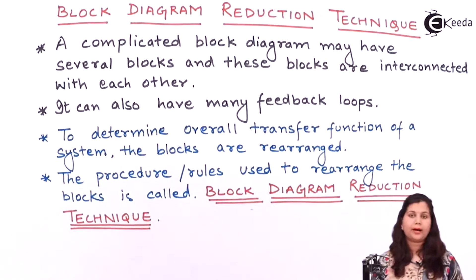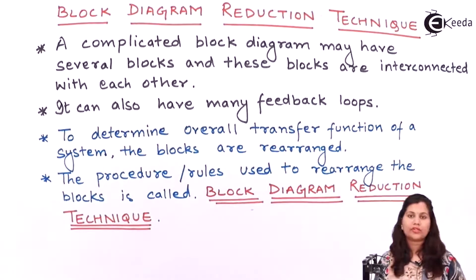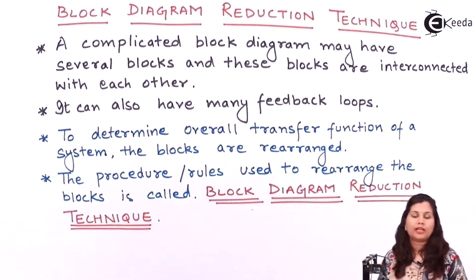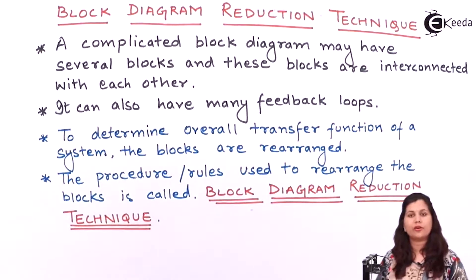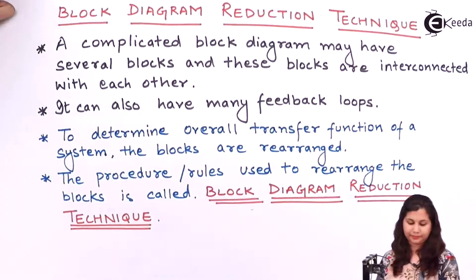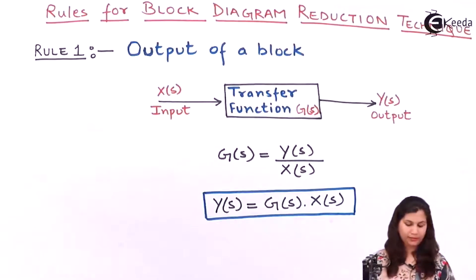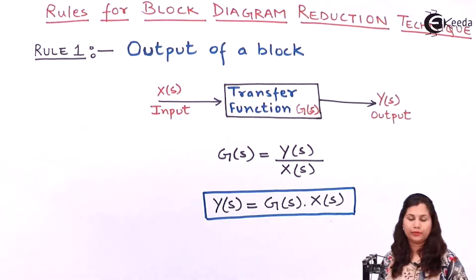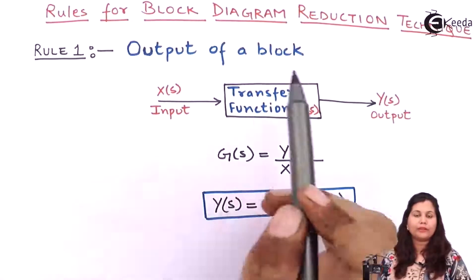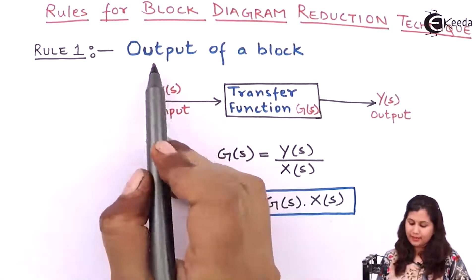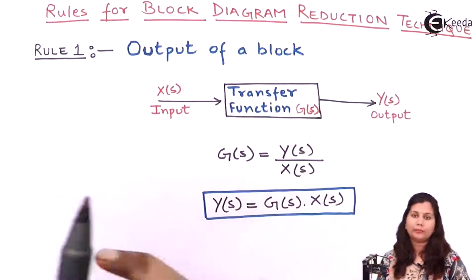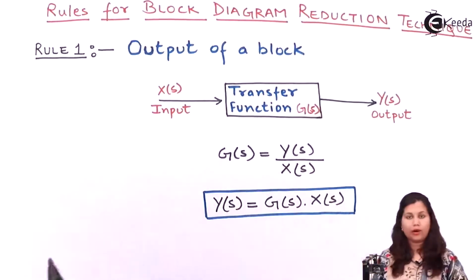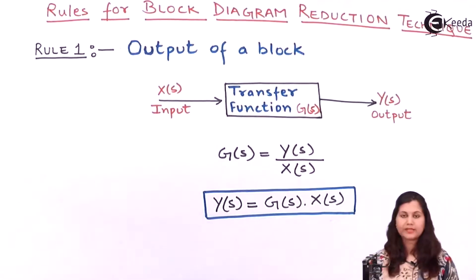In this video we are going to study about the block diagram reduction technique and what are the rules defined in this technique, so that we can apply these rules to find out the overall transfer function of a system. The first rule of the block diagram reduction technique is how we calculate the output of a block. This block represents a component of a control system.